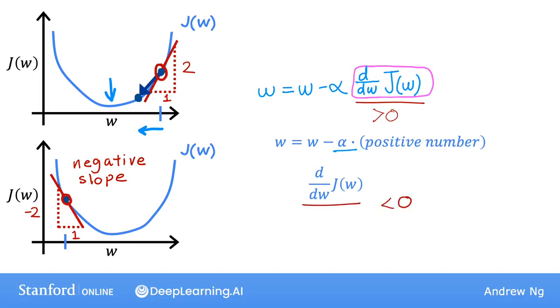So when you update w, you get w minus the learning rate times a negative number. And so this means you subtract from w a negative number. But subtracting a negative number means adding a positive number. And so you end up increasing w.